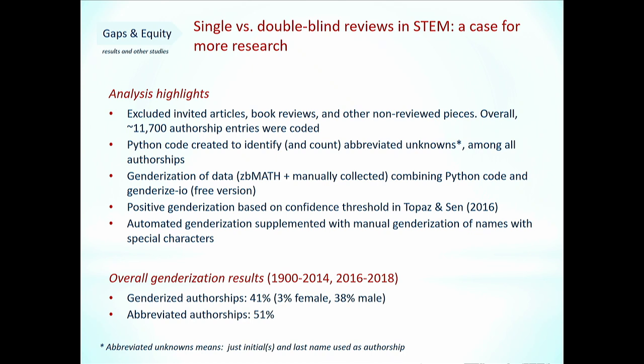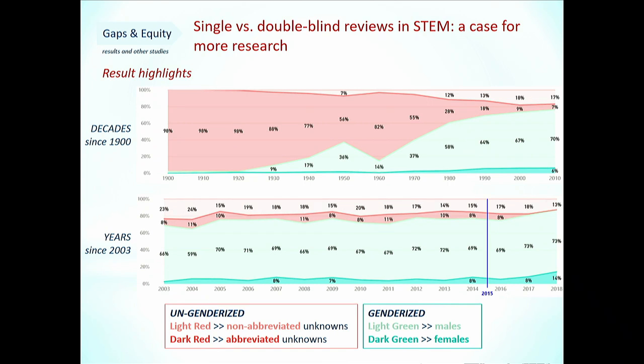The overall genderization results: we genderized 41% of the almost 12,000 authorships; abbreviated authorships were 51%, which is pretty high. Out of those 41% genderized throughout the history of the journal, 3% were female and 38% were male. The top graph shows by decade since the 1900s, and the bottom graph is by year starting in 2003, with the blue vertical line marking 2015, where the double-blind switch happened. The red tones describe un-genderized authorships, and the green represents those that were genderized, with dark green representing female authorships.